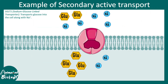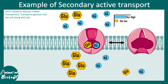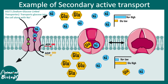SGLT, or sodium-glucose linked transporter, is one example of secondary active transport. Notice the glucose molecules, which are more concentrated in the cytosolic half, and the sodium molecules, which are more concentrated in the extracellular half. The movement of sodium molecules happens down the gradient and glucose is moved up the gradient. This occurs after binding glucose and sodium at the extracellular site, followed by a conformational change which releases glucose and sodium into the cytosolic site. So sodium moved from high to low concentration, whereas glucose moved in the opposite direction — there was more glucose inside than outside.